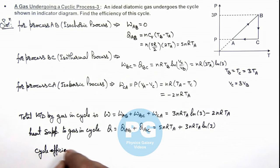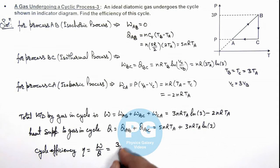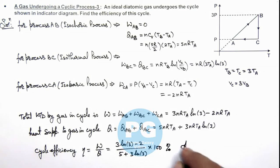Now we can calculate the cycle efficiency eta as work done upon heat supplied, and we multiply by hundred for percentage. So substituting these values we can directly get 3 ln 3 minus 2 divided by 5 plus 3 ln 3, multiplied by hundred in percent. That is the result of this problem.